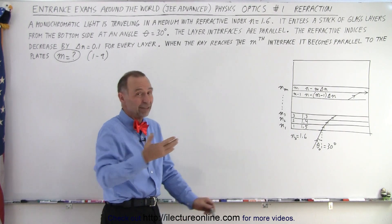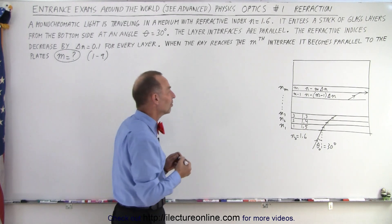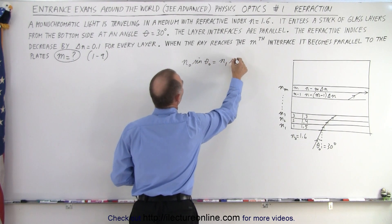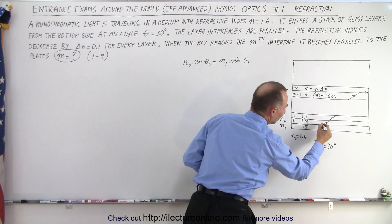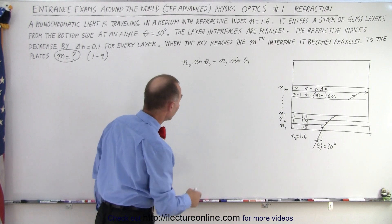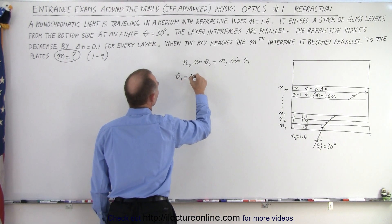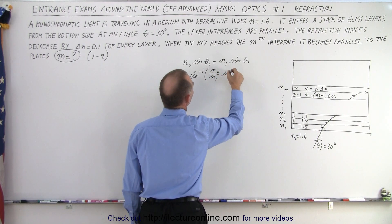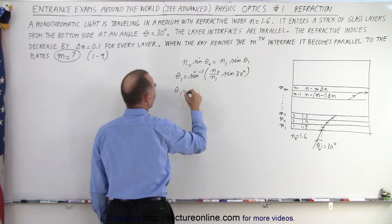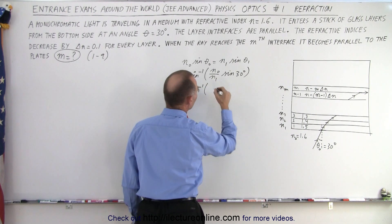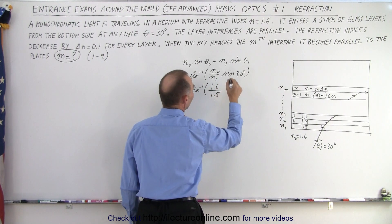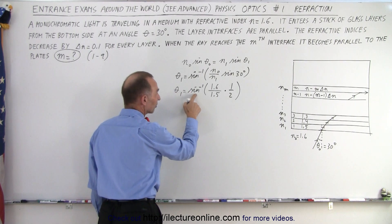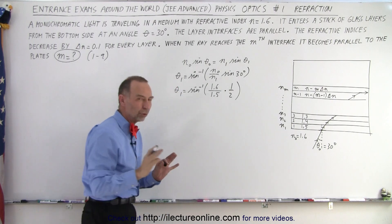At first you think, oh wow, I'm going to sit here for 10, 15 minutes doing this. Actually, it shouldn't take that long once you begin to see the pattern. During the first interface, we get N sub 0 times the sine of theta sub 0 equals N sub 1 times the sine of theta sub 1. So theta sub 1 is the angle of refraction after crossing the first boundary. We can solve for theta sub 1. Theta sub 1 is equal to the inverse sine of N sub 0 divided by N sub 1 times the sine of 30 degrees. When we plug in some numbers, we get theta sub 1 equals inverse sine of 1.6 divided by 1.5 times 1 over 2.